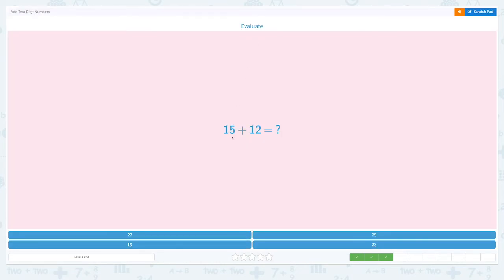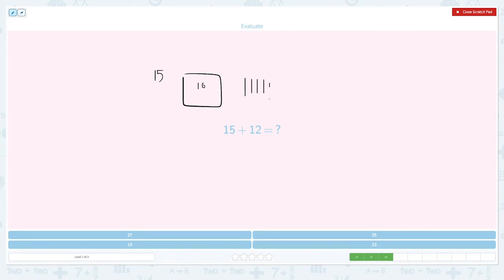Evaluate: 15 plus 12. Let's try the base 10 blocks again. 15 means I have 1 ten and 1, 2, 3, 4, 5 ones.